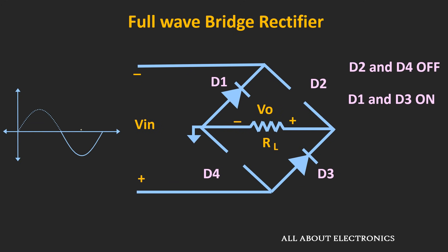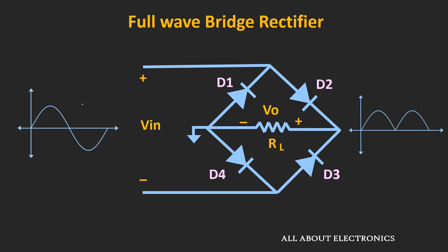Similarly, during the negative half cycle, diodes D2 and D4 will remain off, and diodes D1 and D3 will conduct. So during the negative half cycle, the current in the circuit will flow in this way. During the negative half cycle also, the current flowing through the load is in the same direction. So we will get this kind of waveform. If we combine the positive as well as the negative half cycle, then we will get this kind of waveform.